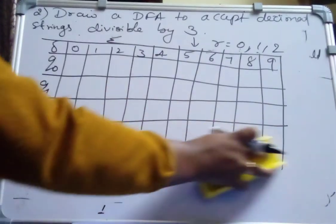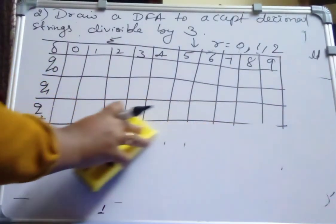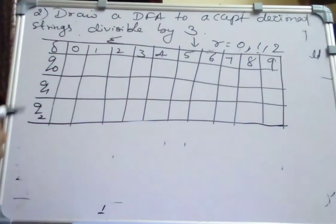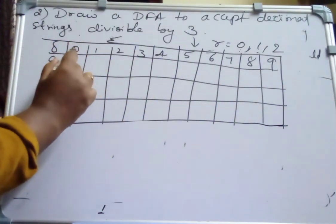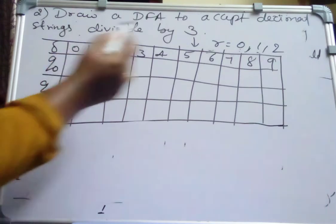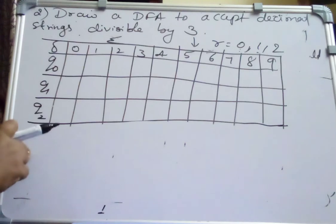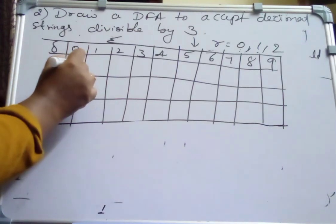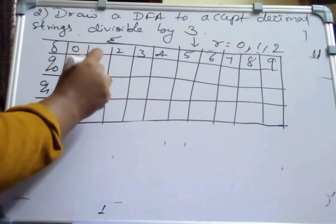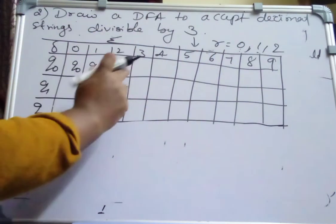First we will write the transition table. After writing the transition table, seeing that we will write the DFA. The easiest method. So here, without changing the sequence, you should be very careful that you write all the numbers starting from 0 to 9 continuously, without interchanging. And this also should be in a sequence like a cycle, you should start. Start from Q0, Q0, Q1, Q2. Write horizontally. Repeat the same sequence.